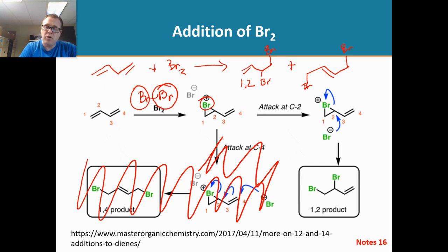And that leftover bromide now attacks at carbon two because the bromine-carbon bond right there is the weakest bond and it has the largest partial positive charge right there.